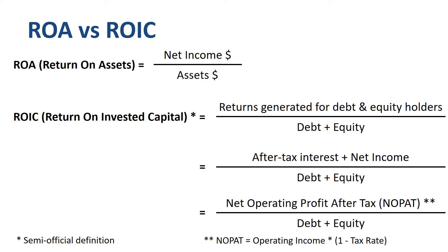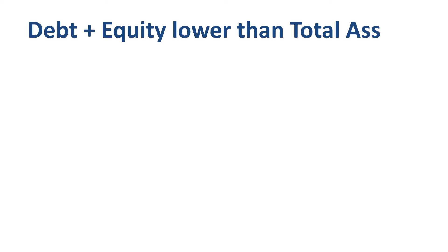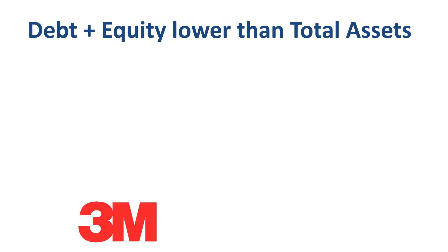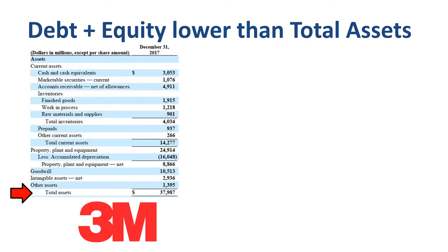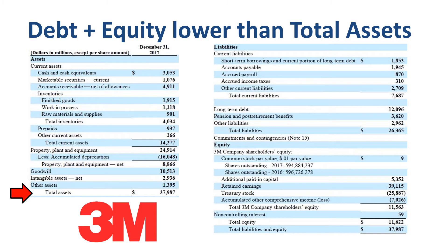From this definition of ROIC, you immediately see that the numerator of ROIC under normal economic circumstances is likely to be higher than the numerator of ROA. After-tax interest plus net income should be higher than net income by itself. For the denominator, the sum of debt and equity is lower than total assets. For example, looking at 3M: total assets — the denominator in the ROA equation — is $38 billion on December 31st, 2017. The sum of all debt and equity, which is short-term debt, long-term debt, and equity, is $25.6 billion.